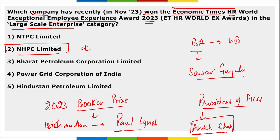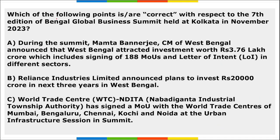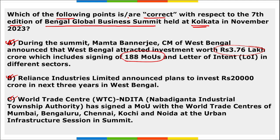Paul Lynch was awarded the Booker Prize 2023. Regarding the seventh edition of the Bengal Global Business Summit held in Kolkata 2023 — all three options are correct. This was held on 21st and 22nd November in Kolkata, West Bengal. It attracted investment of about 3.76 lakh crore rupees, and 188 MOUs and letters of intent were signed during this event.